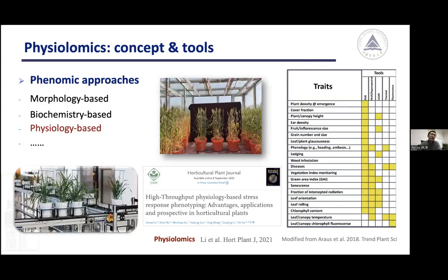In order to better phenotype plants, several phenomics approaches have been developed, including morphology-based phenomics, biochemistry-based phenomics, and physiology-based phenomics. Morphology-based phenomics is the most widely used currently, and the traits it can measure range from plant density and plant height to chlorophyll content and canopy temperature. Today I'm going to focus on physiology-based phenomics. In one of our publications in 2021, we proposed the term 'physiolomics' to refer to physiology-based phenomics.